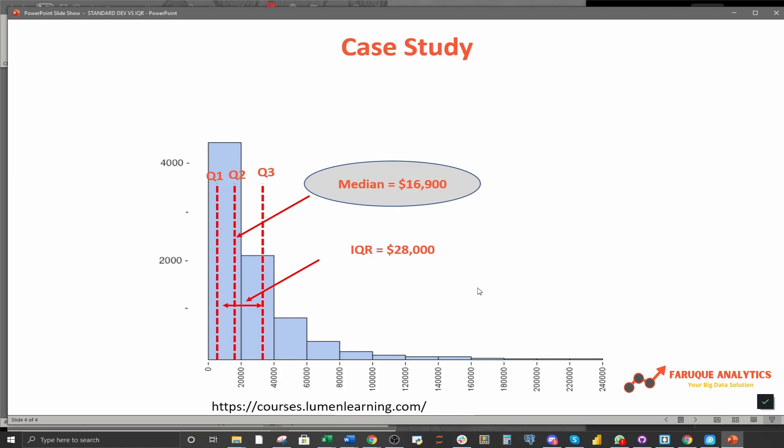Notice how the first method includes incredibly high paying people in the mean calculation, which pushes the mean higher, but that doesn't represent most of the people. In the second method by design IQR ignores really high numbers and really low numbers from its calculation, giving us a better representation of bulk of the sample data set.